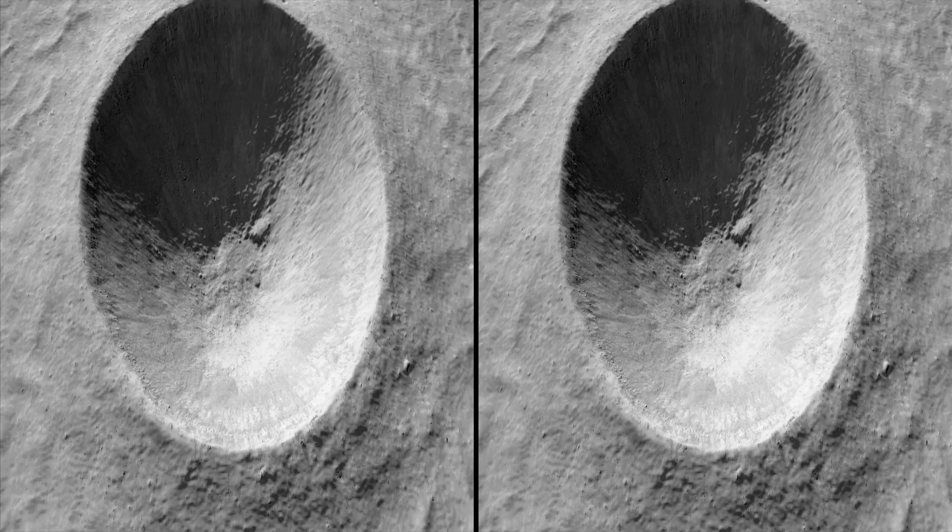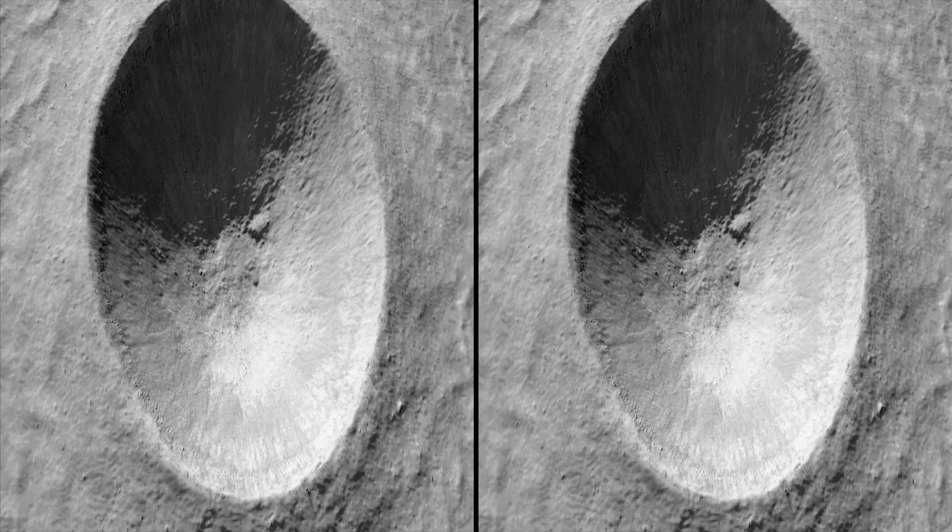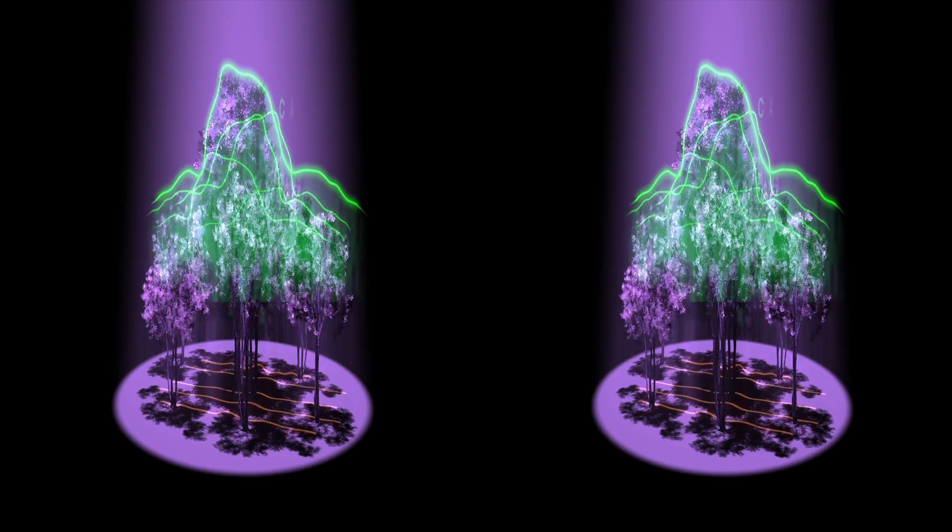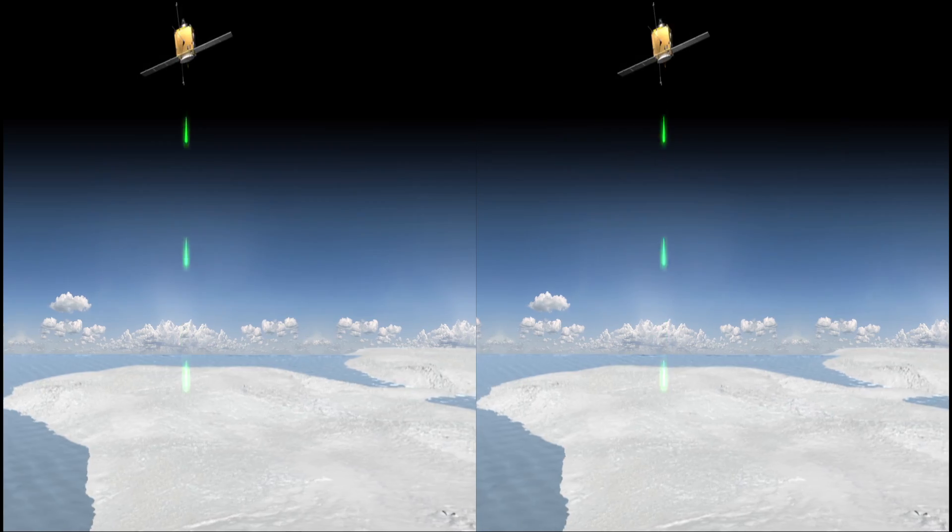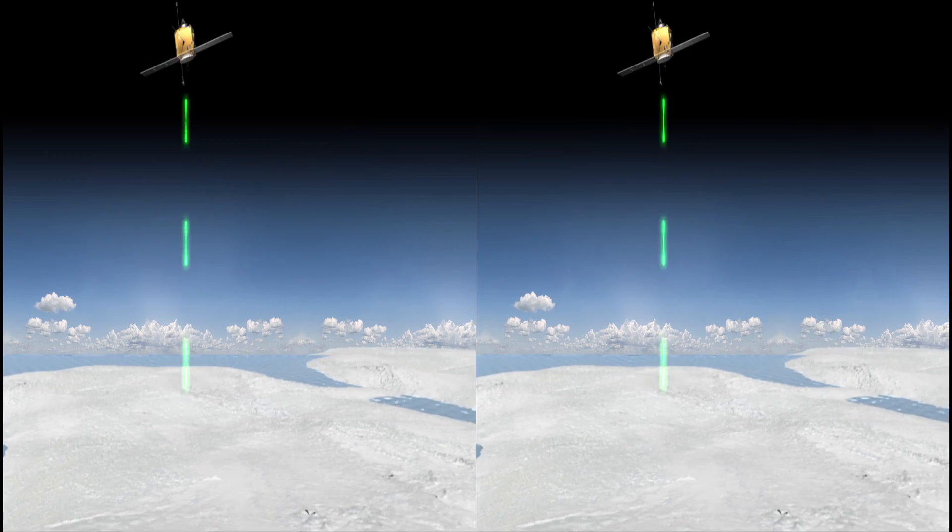But LIDAR is far more versatile than simply measuring the shapes of mountains and craters. Earth scientists, for example, use LIDAR to measure the height and density of the Earth's forests. Others use LIDAR to study small changes in the heights of the Earth's major ice caps over time.